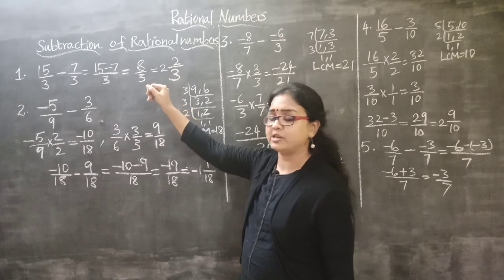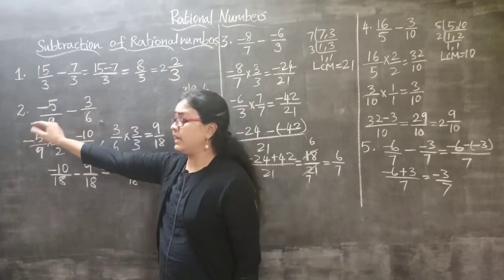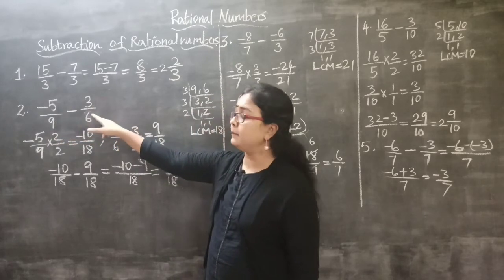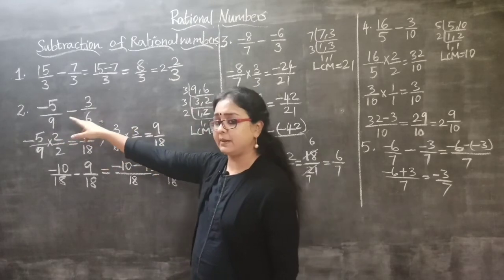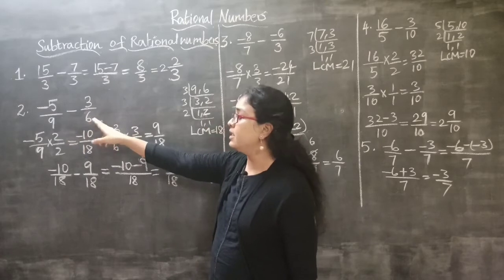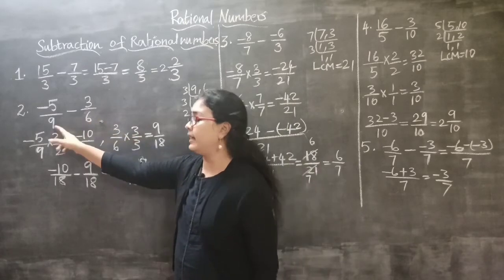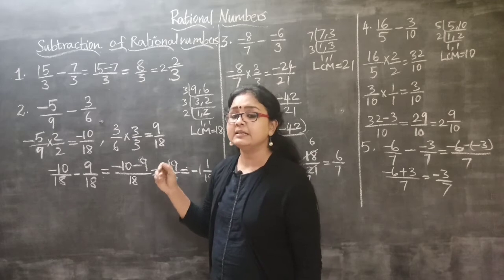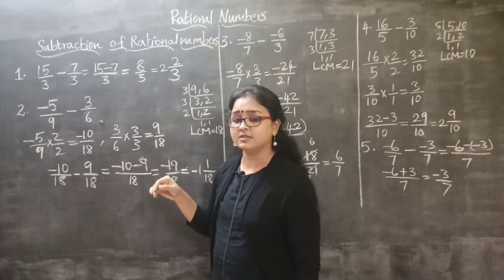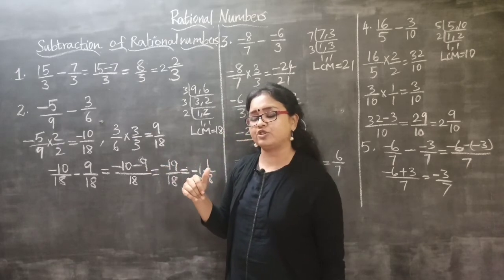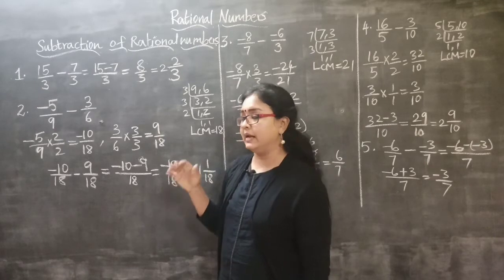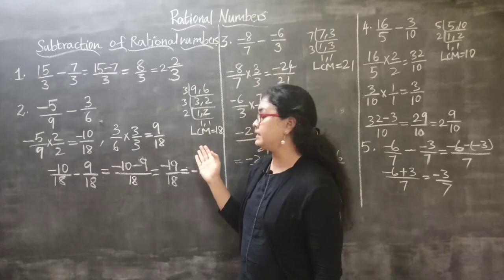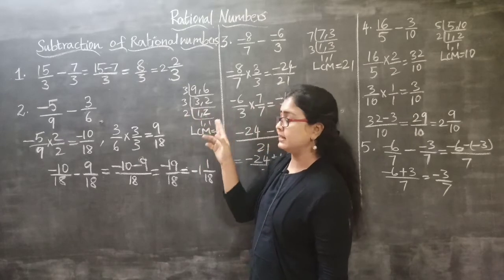The second question is minus 5 by 9 minus 3 by 6. When I check, these are not like fractions — that means these are unlike fractions. When it is unlike fractions, what do we need to do? We have to find the LCM. The LCM of 9 and 6 is 18.